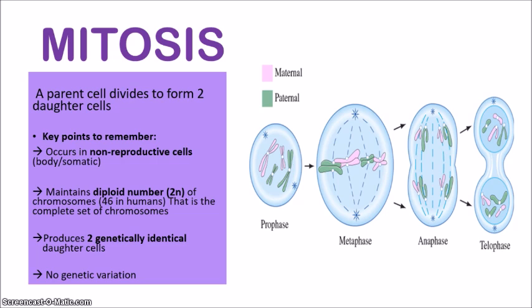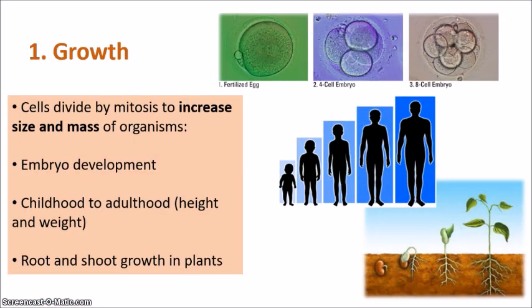So one parent cell divides to form two daughter cells. The first major role of mitosis is growth — cells divide by mitosis to increase the size and mass of organisms. This includes embryo development, where a fertilized egg, known as a zygote, undergoes a series of mitotic cell divisions to produce the embryo, which eventually becomes the fetus.